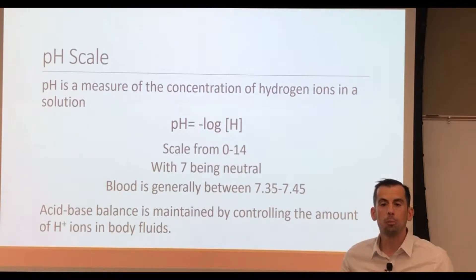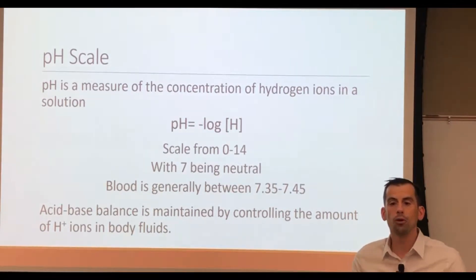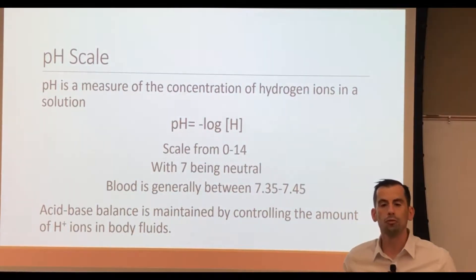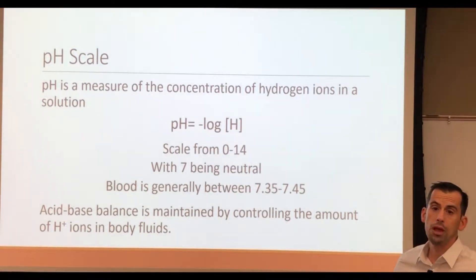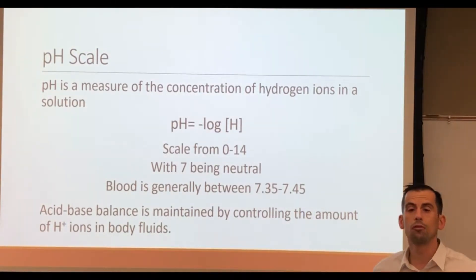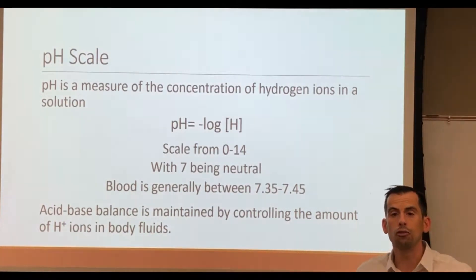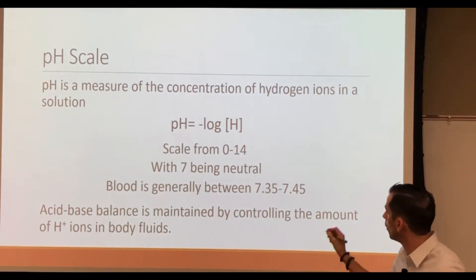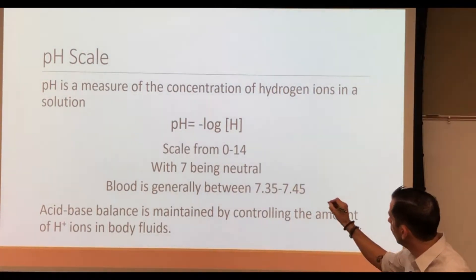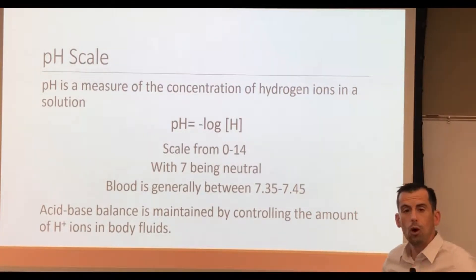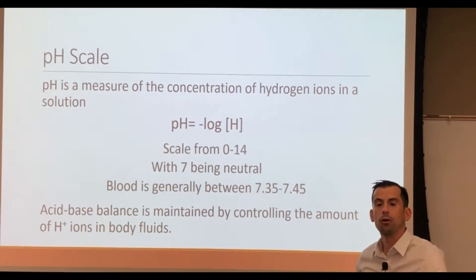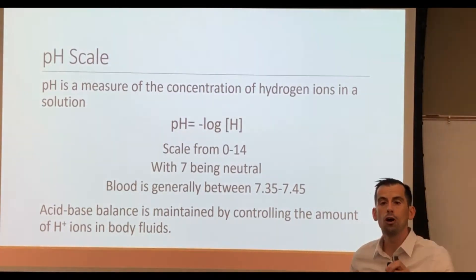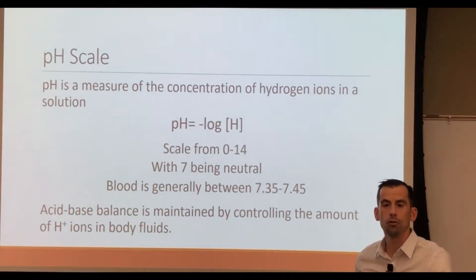The pH scale is going to be a measure of how acidic a solution is and it will go from 0 up to 14. The calculation for pH is going to be the inverse log of the concentration of hydrogen ions. When we look at that formula, the only thing that matters when determining the pH of a solution is the amount of free hydrogen ions that are present.